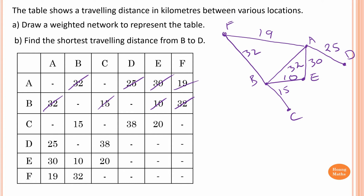Now let's move on to vertex C. C to B already done. C to D is 38 — so I just go C to D, this is 38. And then C to E is 20 — so C to E is 20, just connect them together. Now moving to vertex D: D with A already done, D to C 38 already done. Similarly E to A, E to B, and E to C already done. And F with A and F with B already connected.